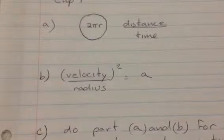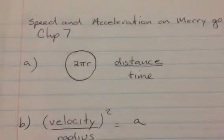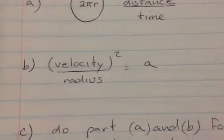Part B, they want to know the acceleration. Well, the velocity you determined in Part A, you have to square that and divide it by the radius, and that will give you the acceleration.